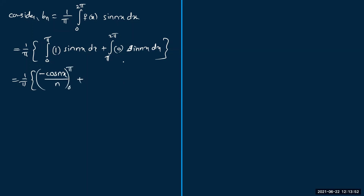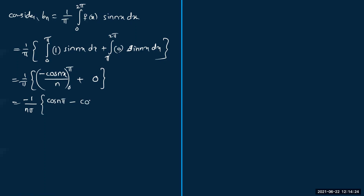The second term, zero times sin(nx), integrates to zero. For the remaining term, bringing minus one and n out of the bracket gives minus one by n pi times cos(nx) evaluated from zero to pi. Substituting the upper limit x equals pi gives cos(nπ), and the lower limit x equals zero gives cos(0). The value of cos(nπ) is (−1)ⁿ and cos(0) is one.